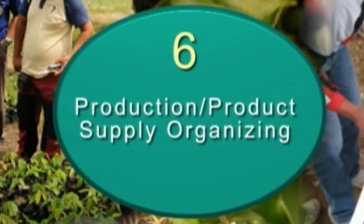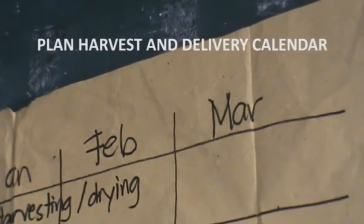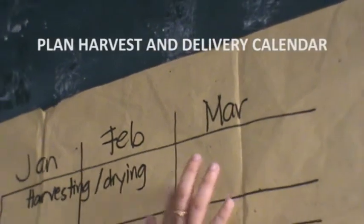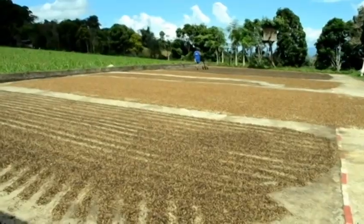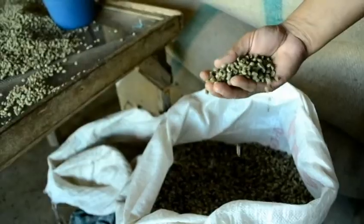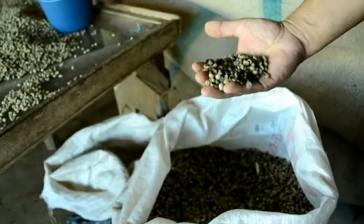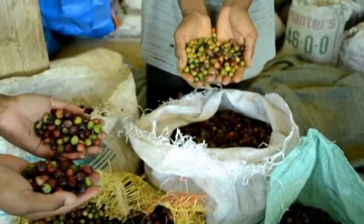Step 6 is focused on planning and organizing product supply to ensure reliability both in quality and quantity.